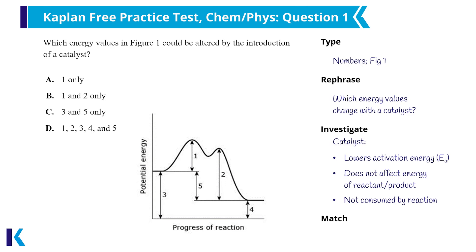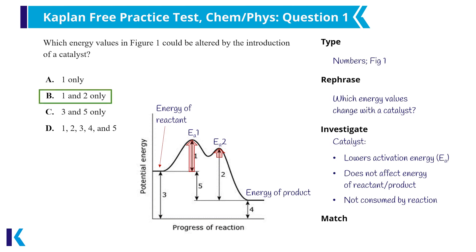From my content background, I know the start of the graph represents the energy level of the reactant and the end represents the energy level of the product. The figure showed two humps, and the activation energy is the energy difference from the reactant to the transition state. Since there are two humps, there are two activation energies — one going from reactant to the first transition state, and one going from the intermediate to the second transition state. Since both of those activation energies overlap with energy values one and two from the graph, I can select answer choice B. C is incorrect because energy value three represents the energy of the reactant, and catalysts don't affect that value.